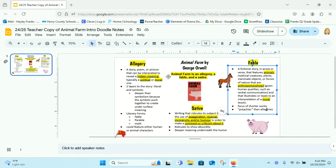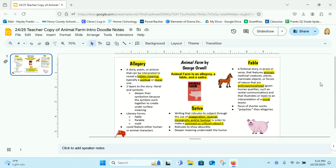And then our middle one, Animal Farm is an allegory, it's a fable, and it's a satire. So our new novel actually fits in all three of these types. I'm excited to dive into this new text with you all.